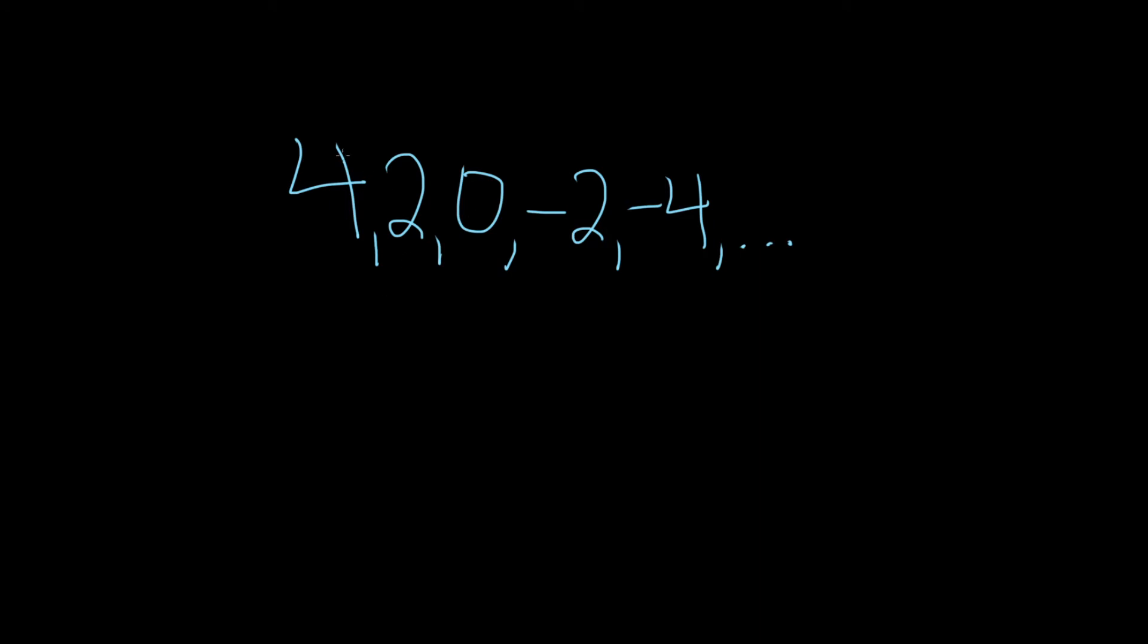So in this case, to get from 4 to 2, we simply have to add negative 2. And to get from 2 to 0, we add negative 2. And to get from 0 to negative 2, we add negative 2.